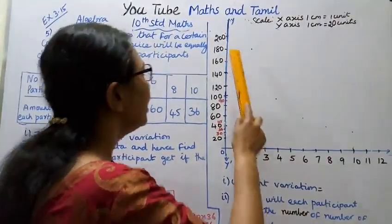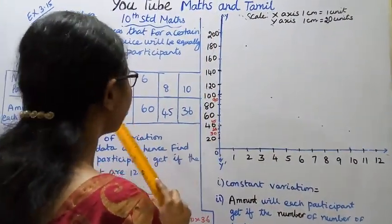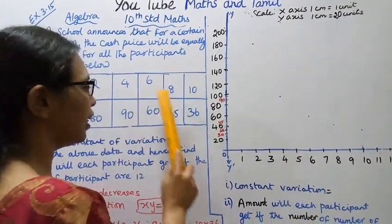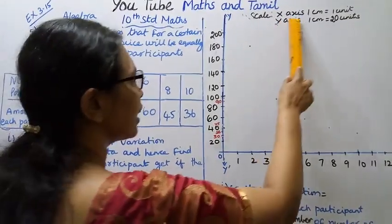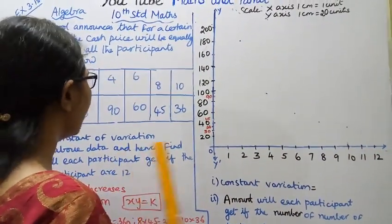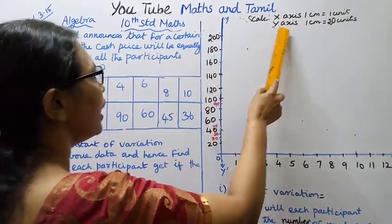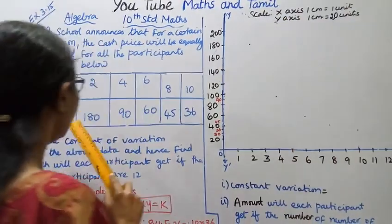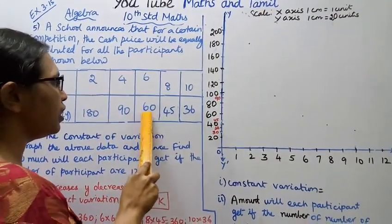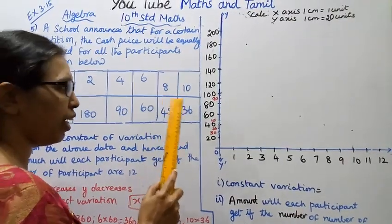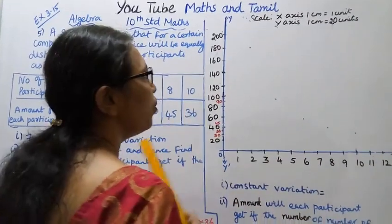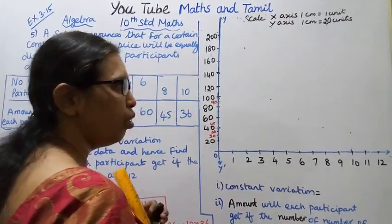Now the scale. X-axis values are 2, 4, 6, 8, 10. X-axis: 1 centimeter equal to 1 unit. Y-axis: 1 centimeter. Y-axis values are 180, 90, 60, 45, 36. Y-axis scale is set to 20 units arbitrarily.